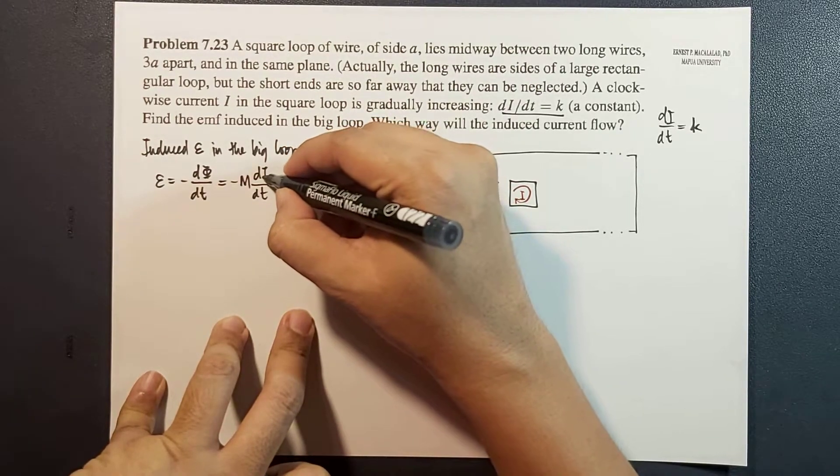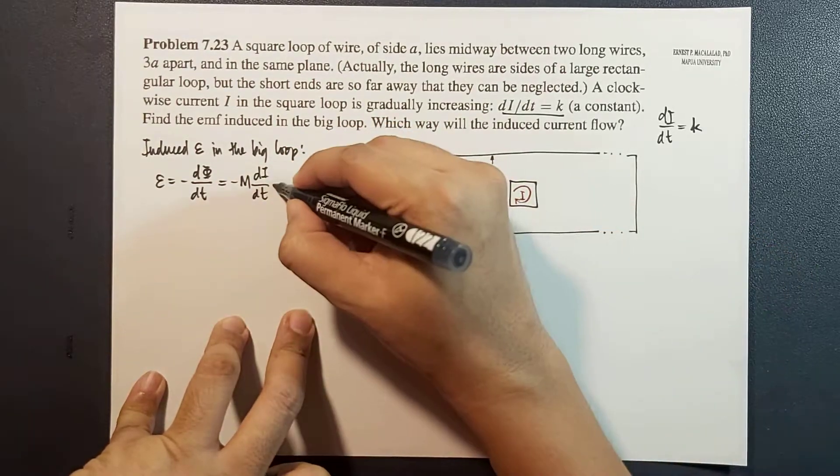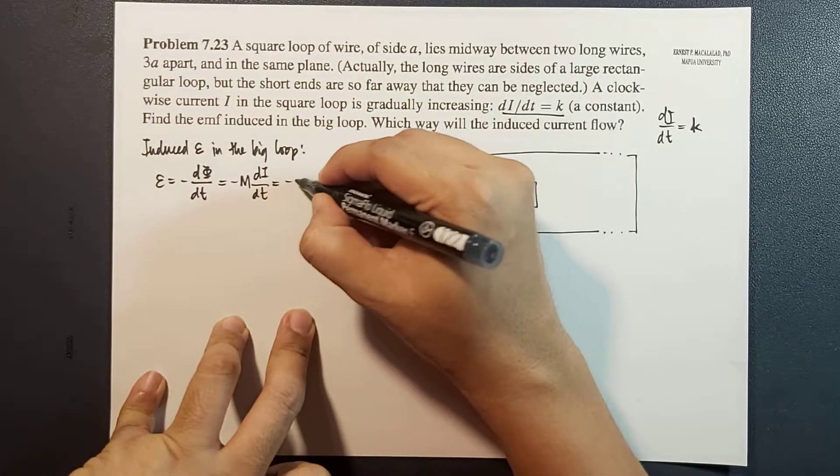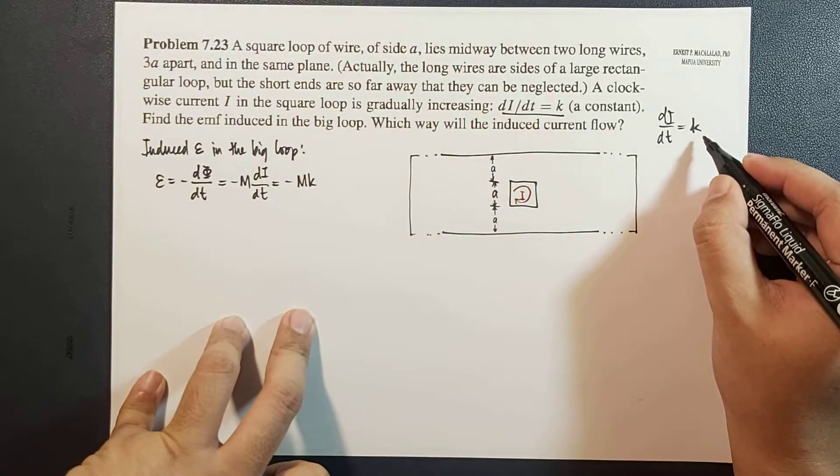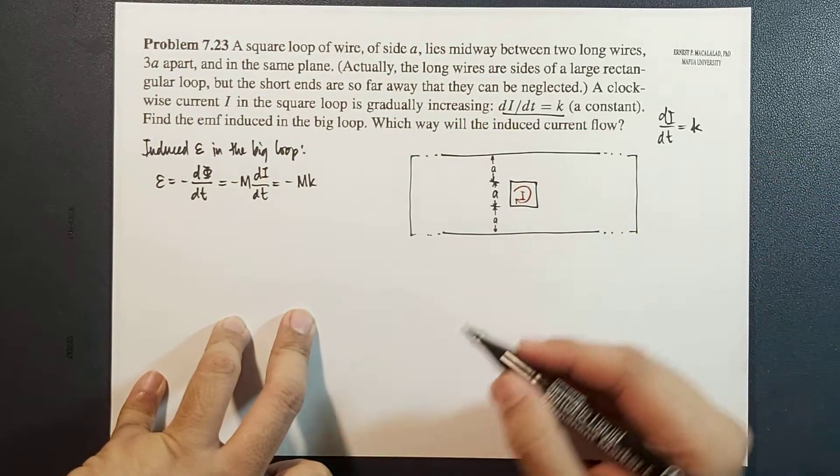So this is equal to negative M times the derivative of I respect to time. This current I is the current in the small loop. And therefore, this is equal to negative M K because this derivative is equal to K.